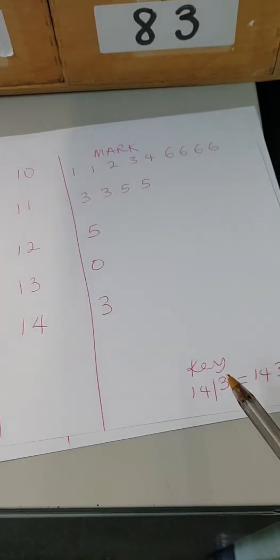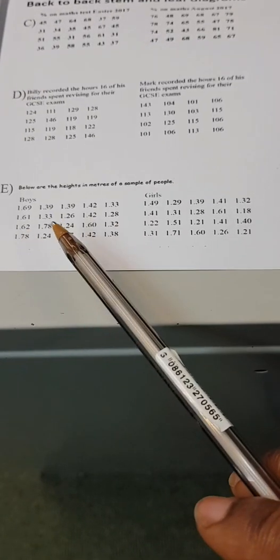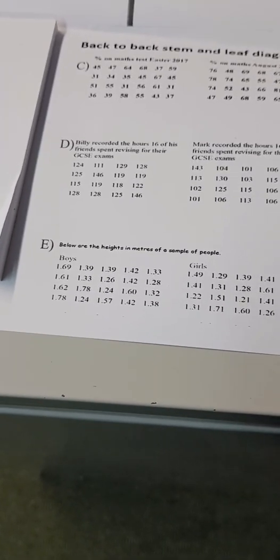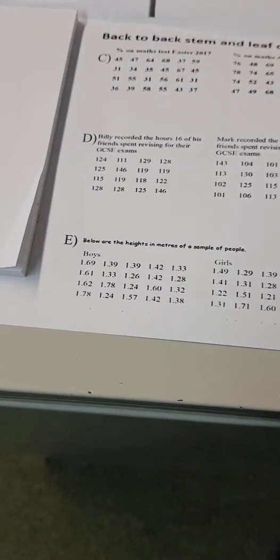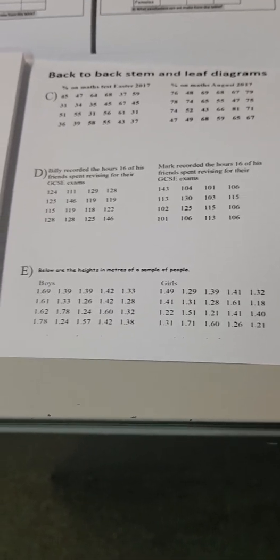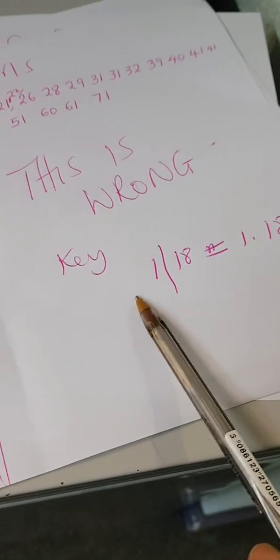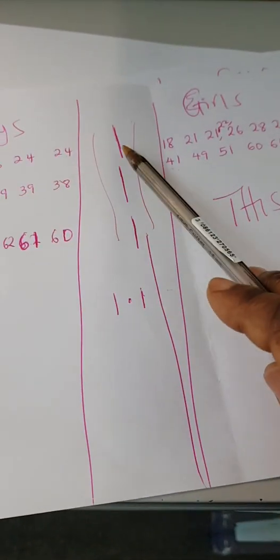Now I'm going to show you something very important — the decimal stem and leaf diagram. In this case it's a decimal back-to-back stem and leaf because we are comparing the heights of boys to the heights of girls. If you were to do it the way we just did example D, you might be tempted to split the numbers incorrectly and read something like 1.18 from a wrong stem split — but that would be wrong.